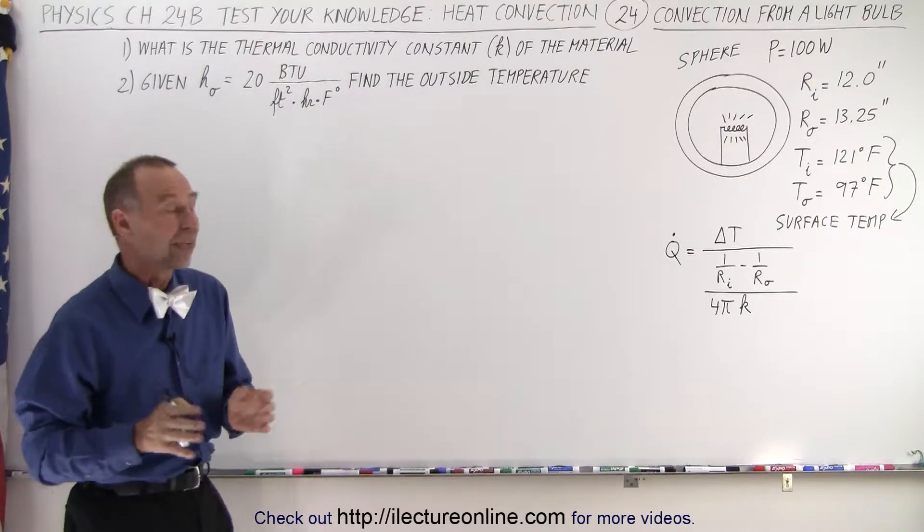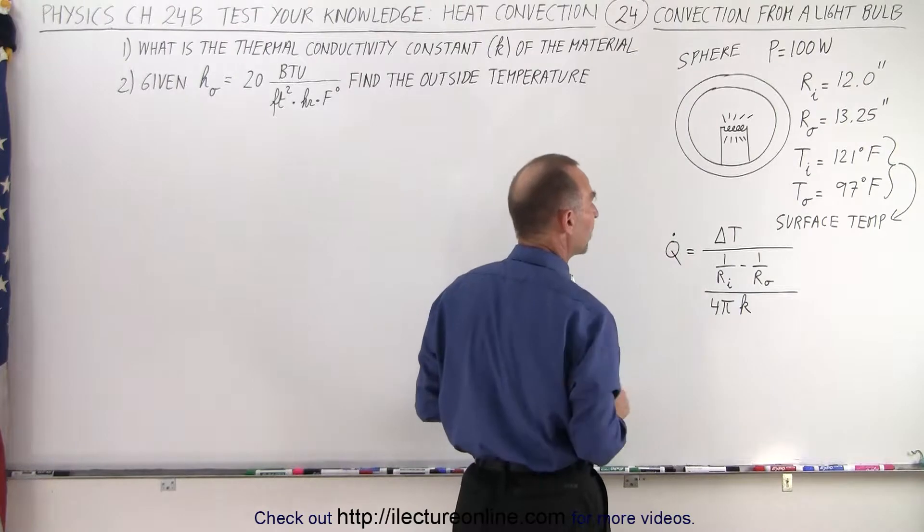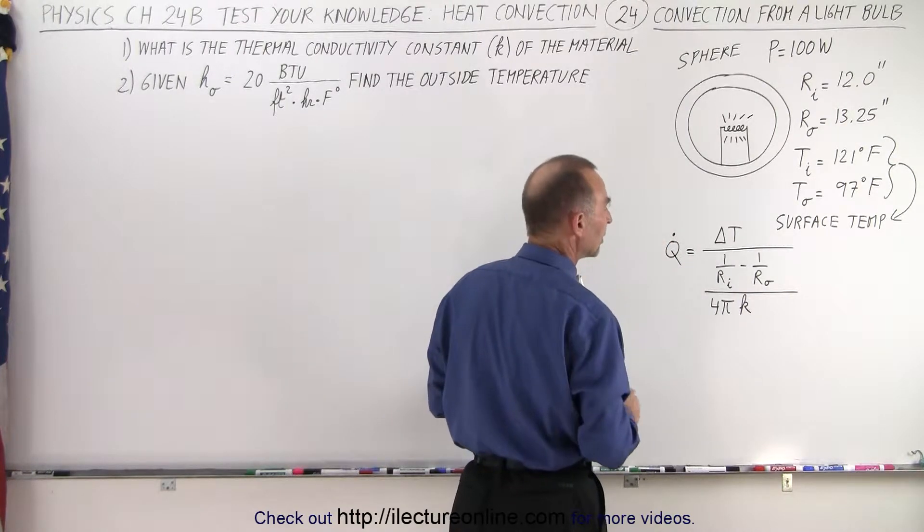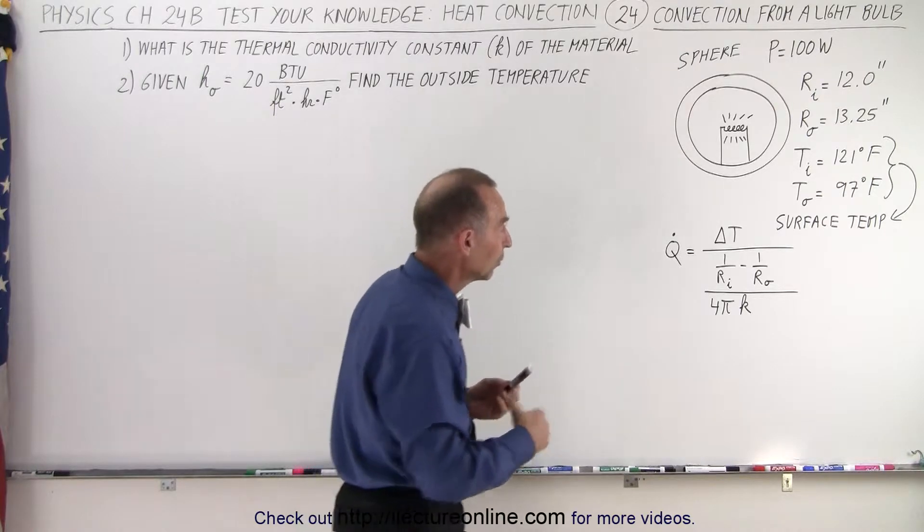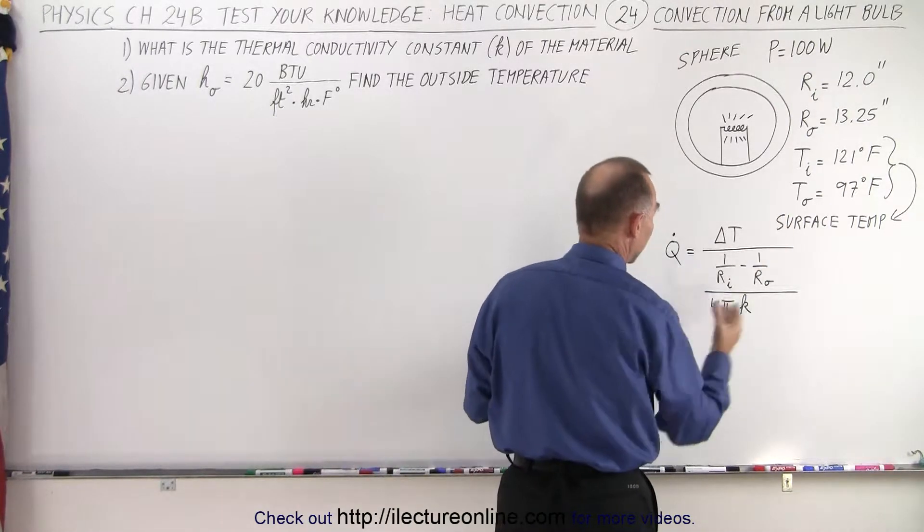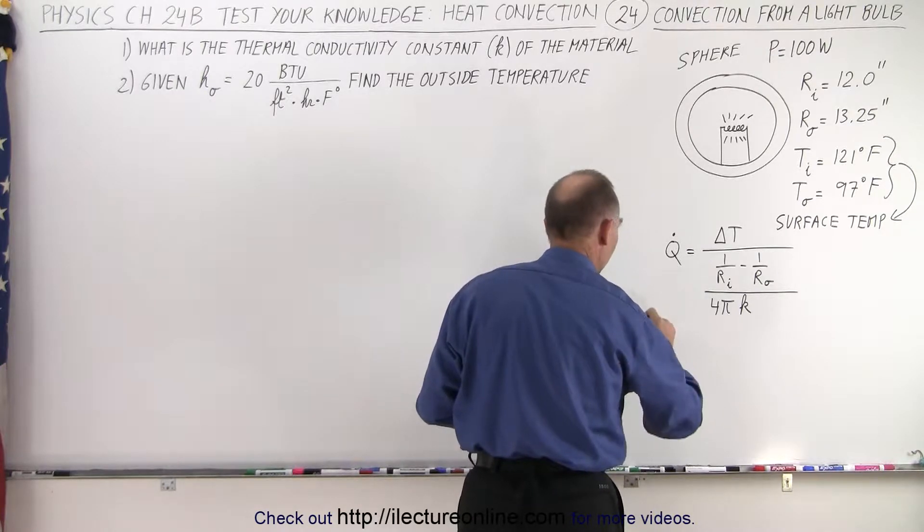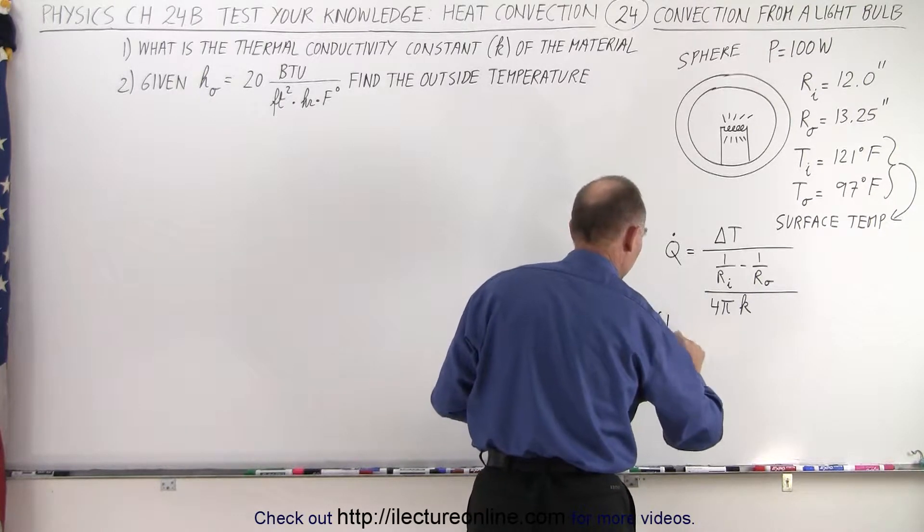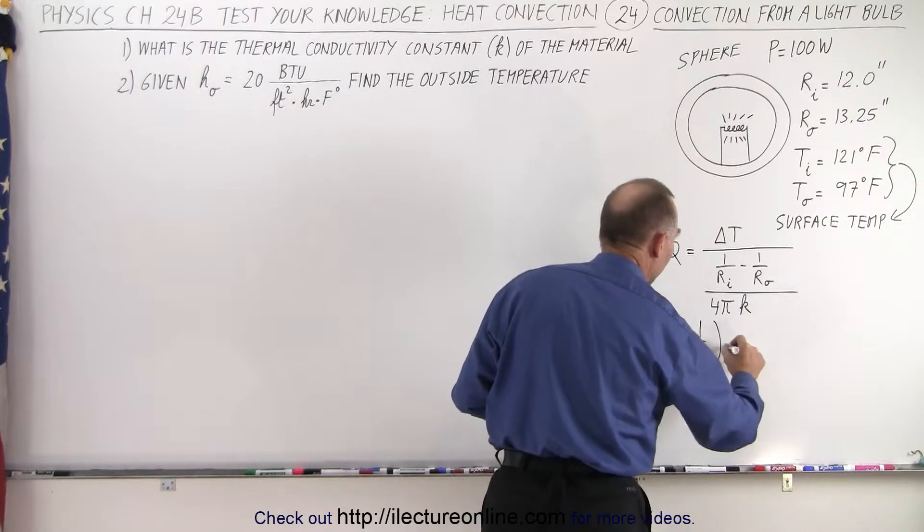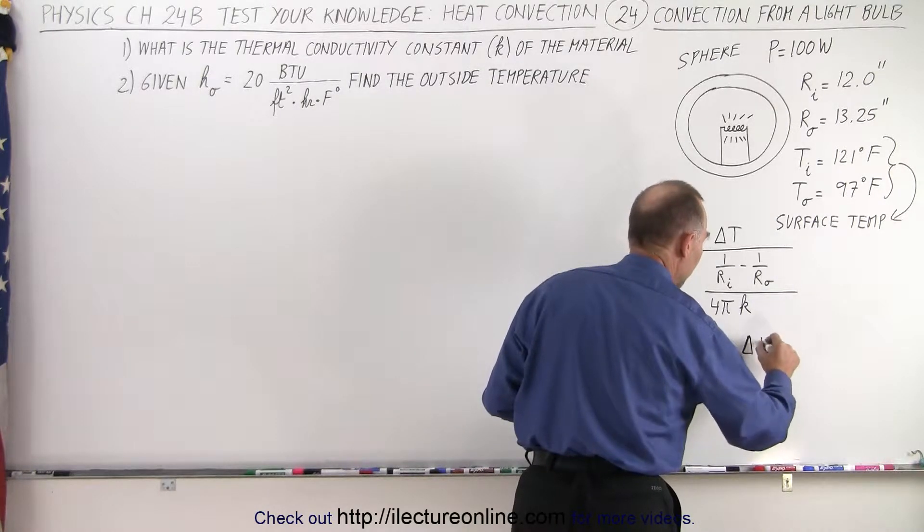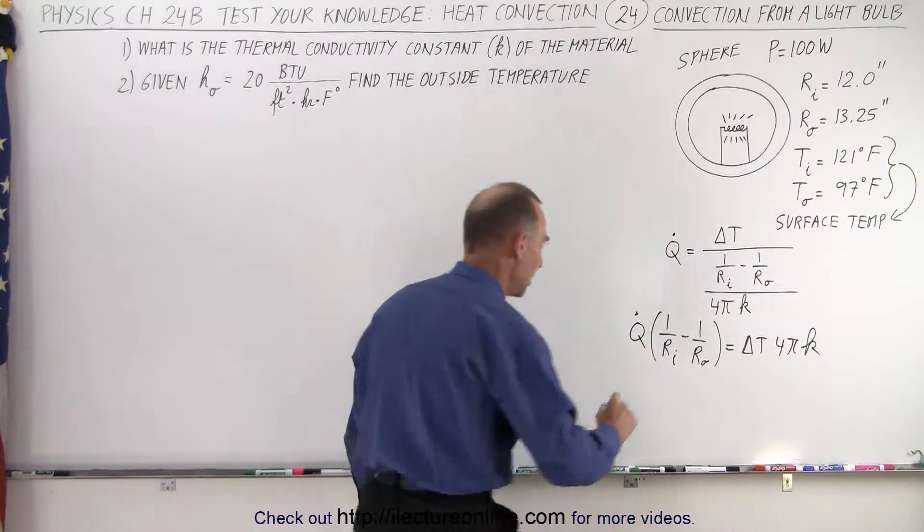In case we forgot, here's the equation that tells us the conduction of heat through a spherical object with inner and outer radius. So let's go ahead and solve that equation for K. So first what we do is we can bring the K up and we can bring the radii to the left. So we have Q dot times one over our inside minus one over our outside is equal to delta T times four pi times k.